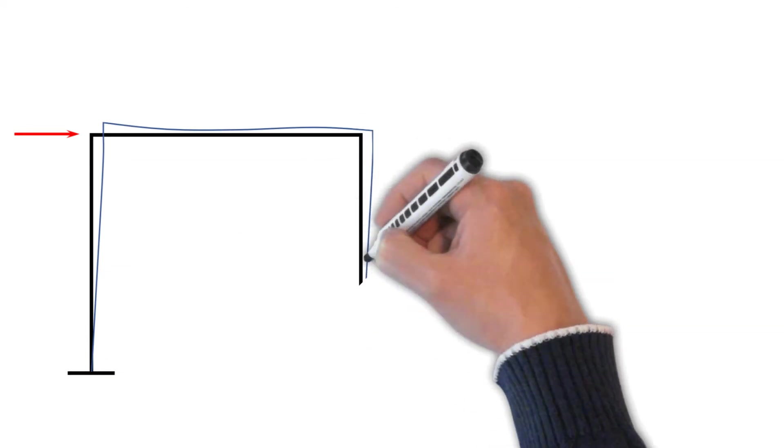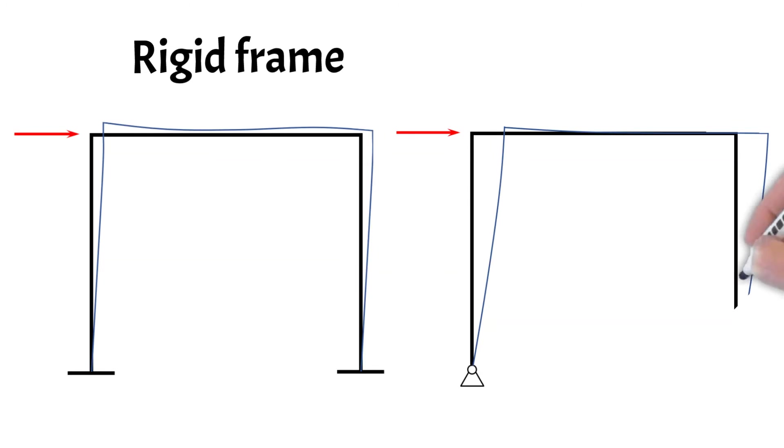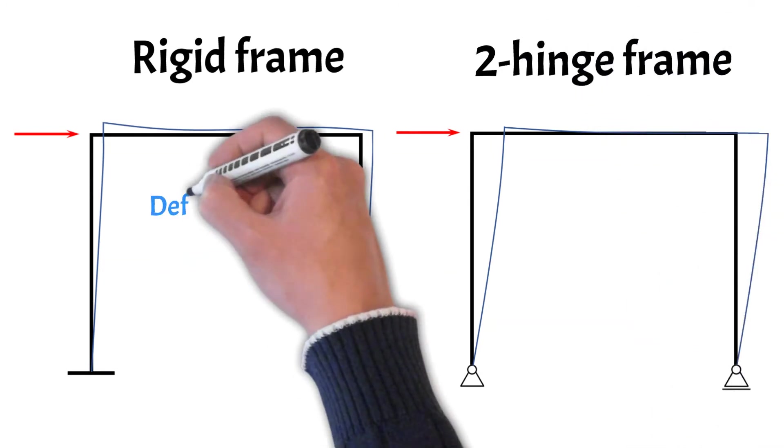For example, the rigid frame, as the name already says, is more rigid compared to a two-hinged frame, meaning that it allows for less deformation and deflection.